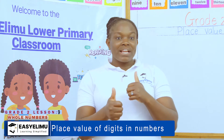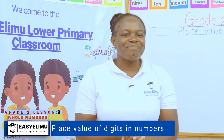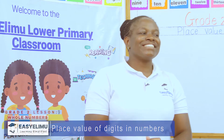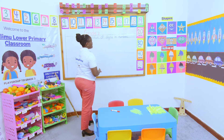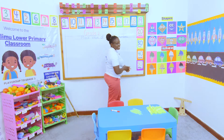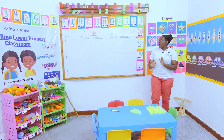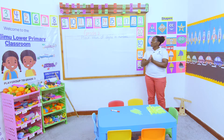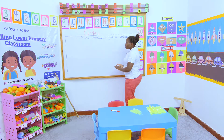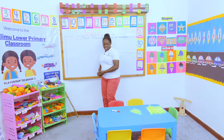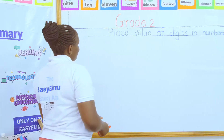Welcome to Easy Learning Simplified. Now we've been doing place value — we did place value using bundles of sticks, we did place value using the teens, and now we want to identify the place value of digits in numbers. These are very common questions that most of you will always ask.